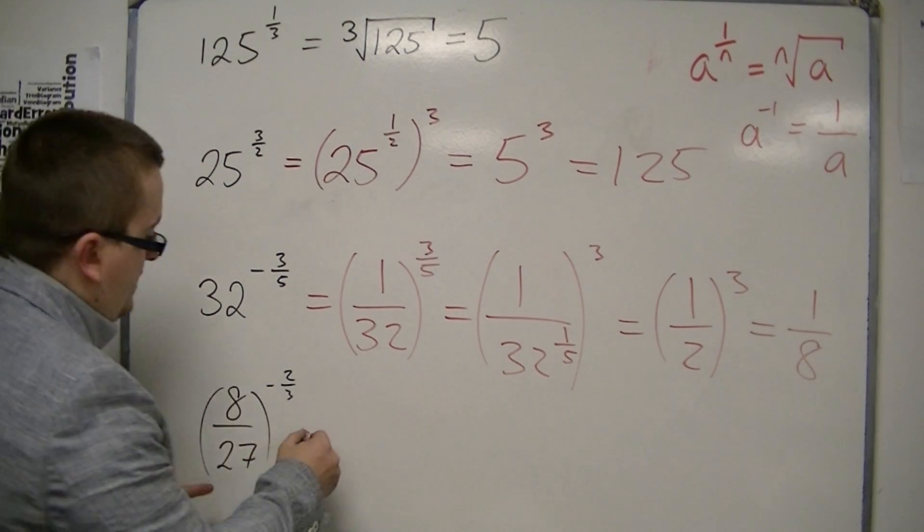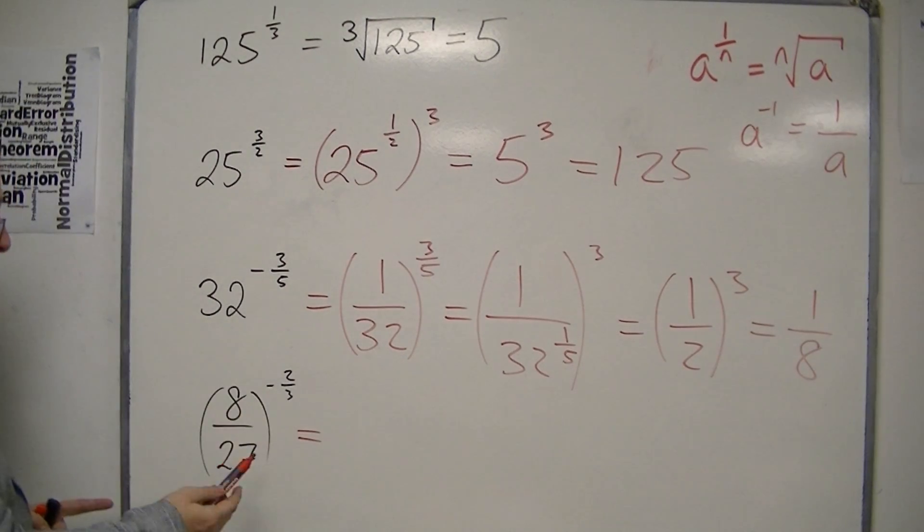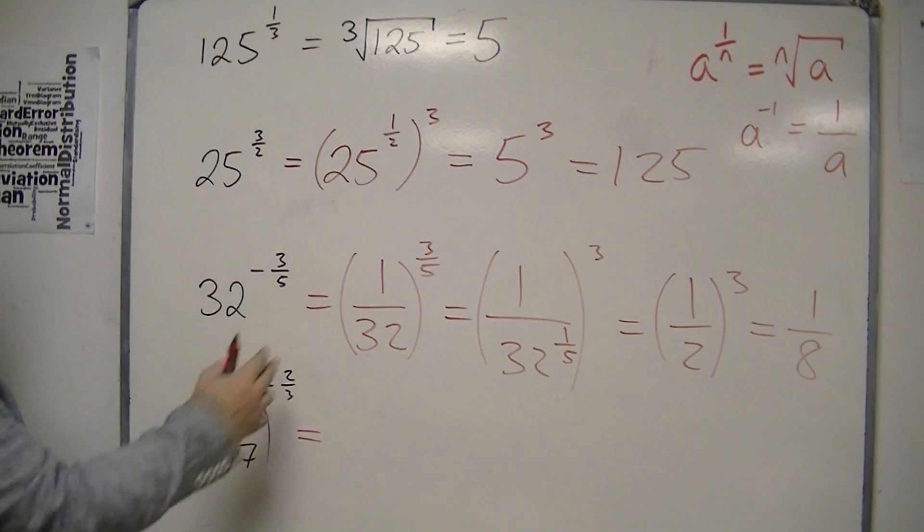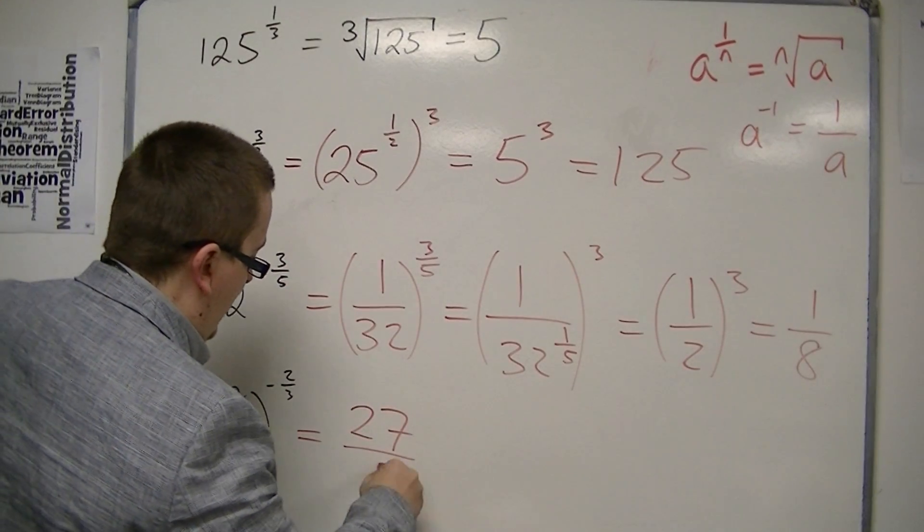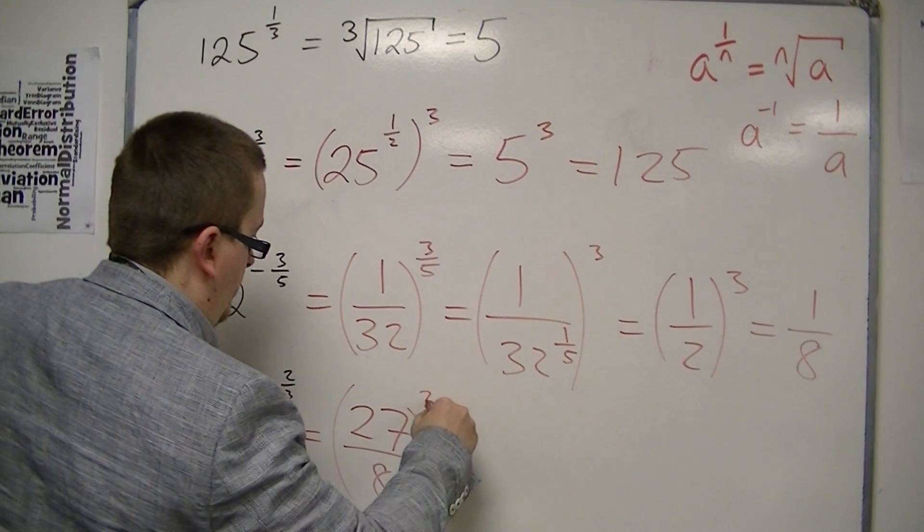We're going to start off in this example by dealing with the negative sign. We know that flips the fraction, much as it did 32 to 1 over 32. So that flips the fraction to 27 over 8, all to the 2 thirds.